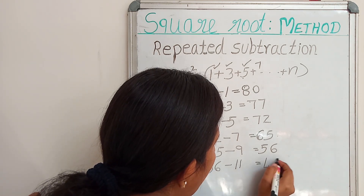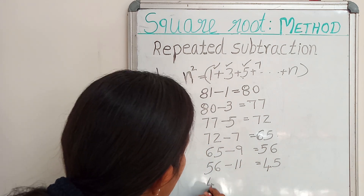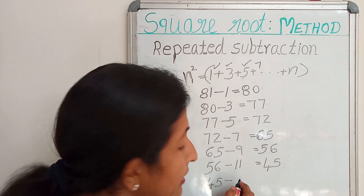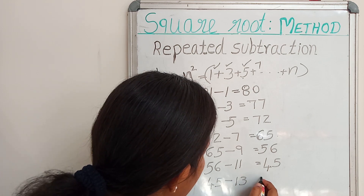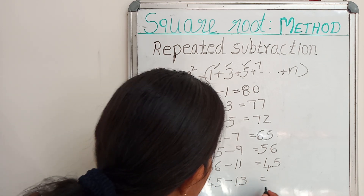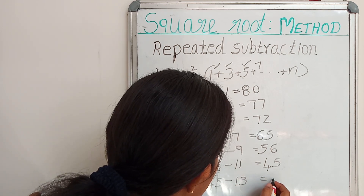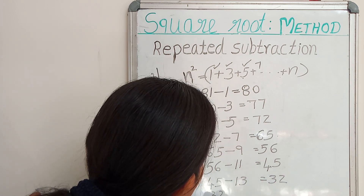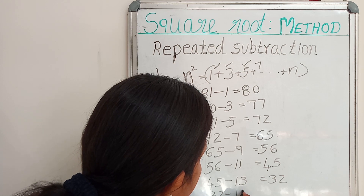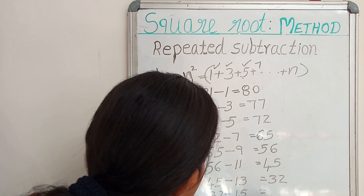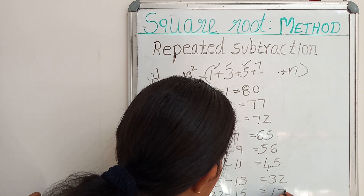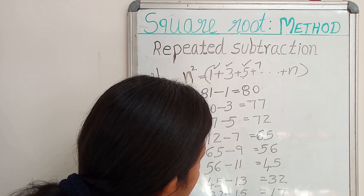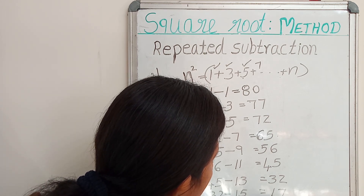That is equal to 45. Then 45 minus the next odd number, 13, then we will get 32. Then 32 minus 15, that is equal to 17. Then 17 minus the next odd number, 17, that is equal to 0.